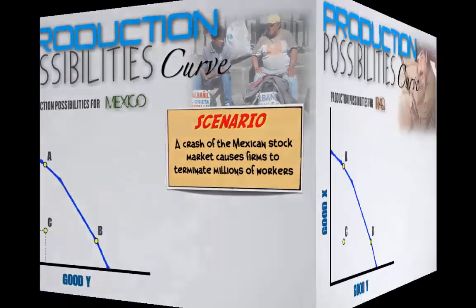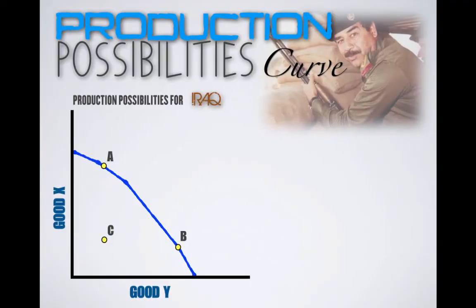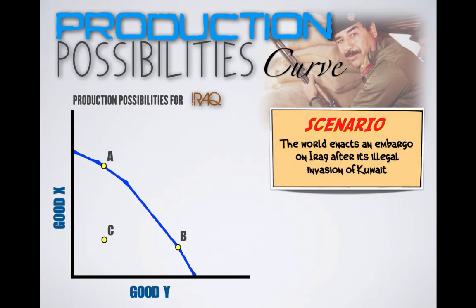Let's do one more. Provided is the production possibilities curve for the country of Iraq. Let's say that the world enacts an embargo against Iraq after it illegally invades its neighbor Kuwait — this is exactly what happened in the Persian Gulf War. As punishment for its illegal invasion, all trade with Iraq is being cut off, meaning Iraq does not have the same access it used to to important resources and materials. As a result, Iraq is going to see a decrease in its capacity to produce and its production possibilities curve is going to shift inward.